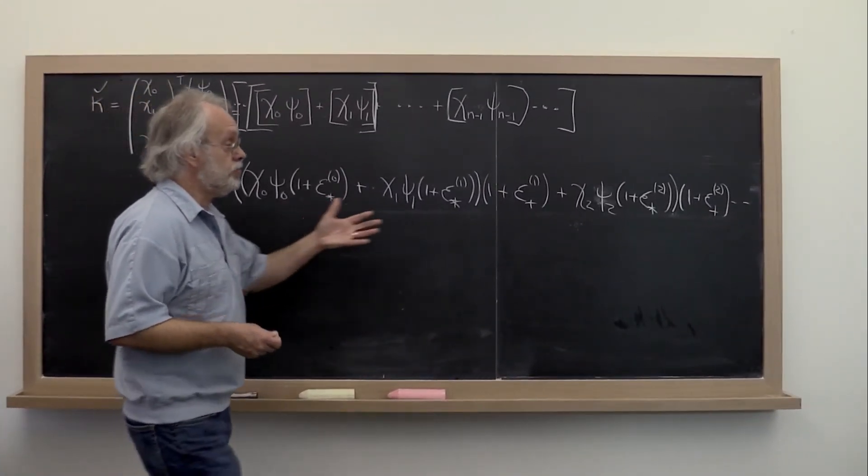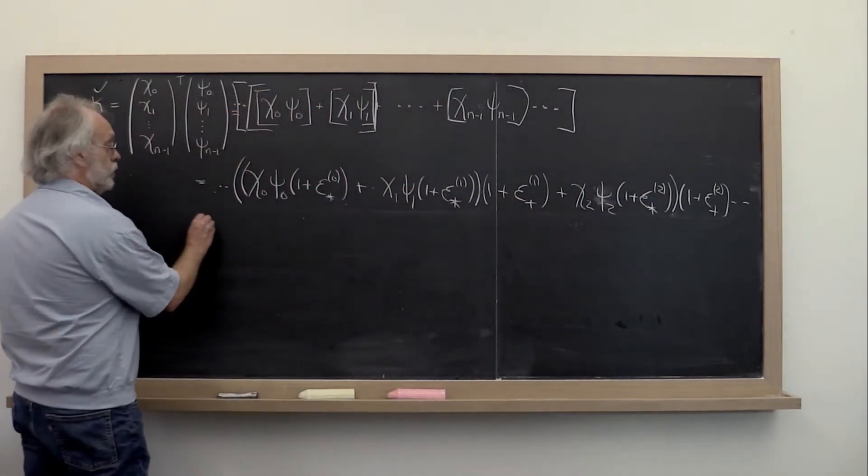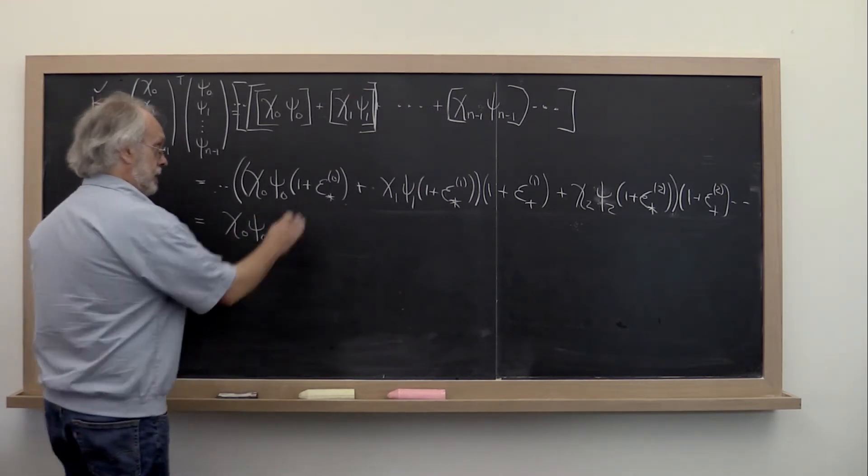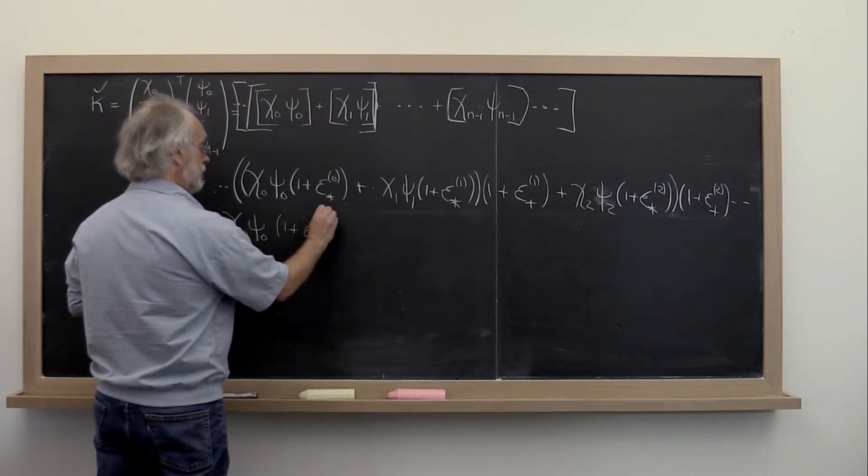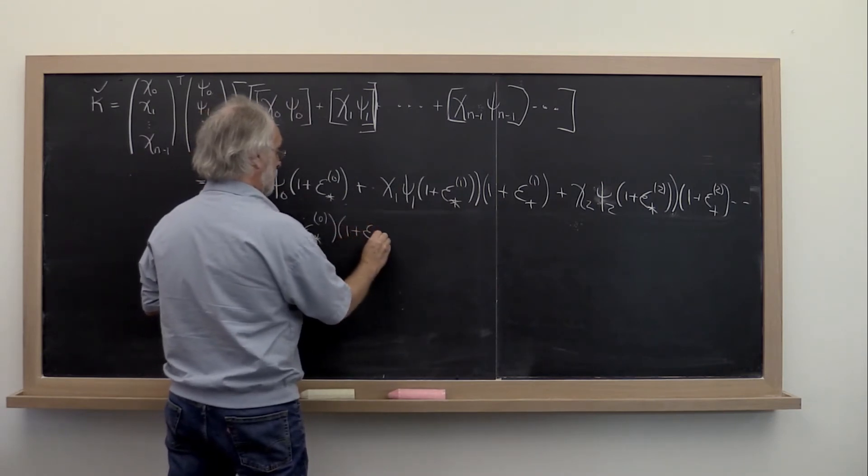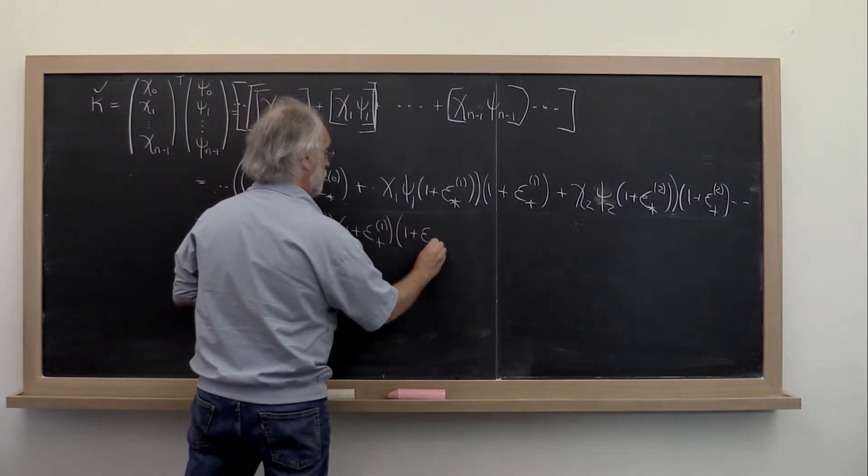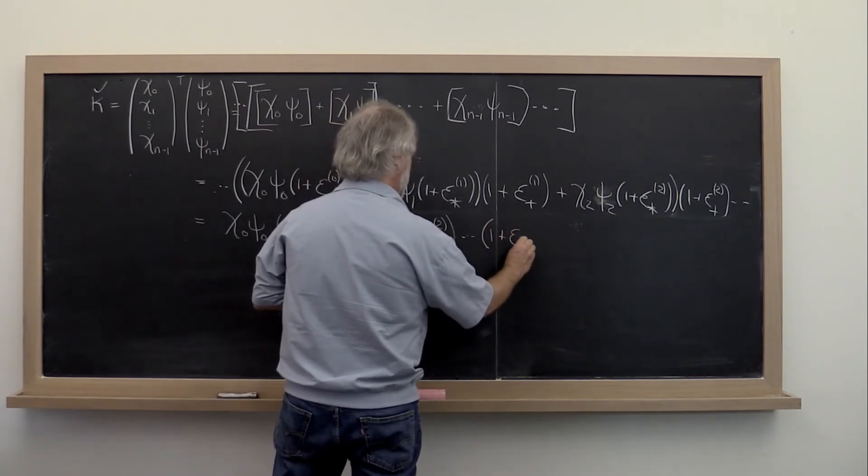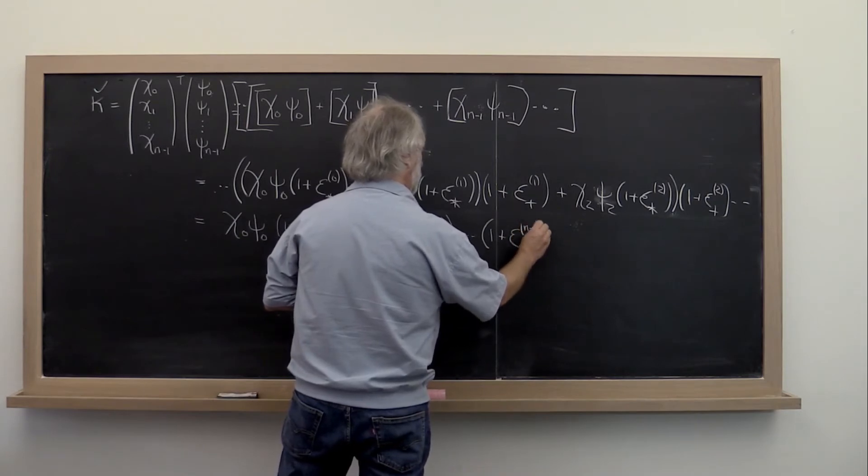Now let's distribute all of these 1 plus epsilons that come along. If you do that, what you get is that the first term is hit by 1 plus epsilon star 0, and then this one, 1 plus epsilon plus 1, and then 1 plus epsilon plus 2, and so forth, all the way down to 1 plus epsilon plus n minus 1.